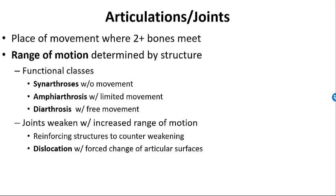The next chapter we're going to discuss is articulations and joints. Because the bones of the skeleton are relatively inflexible, movement can only occur at articulations or joints — this is where bones interconnect. Each joint ultimately reflects a compromise between the need for strength and the need for mobility. As a result, articulations will differ in the amount of movement permitted, and this property is known as range of motion.